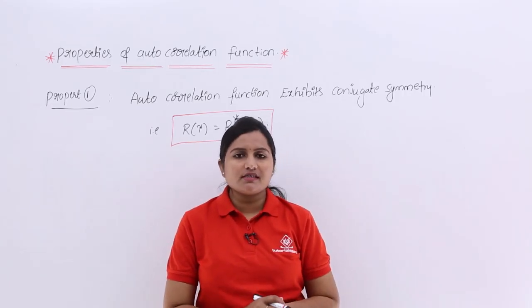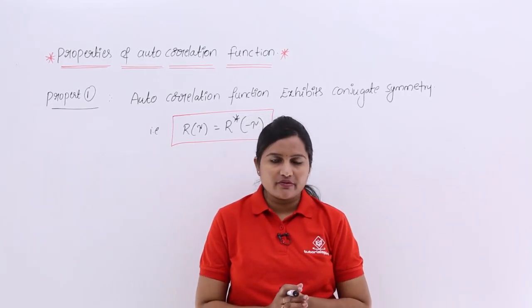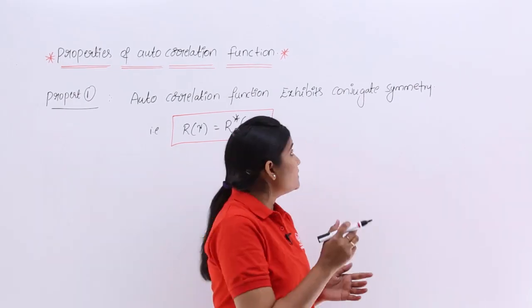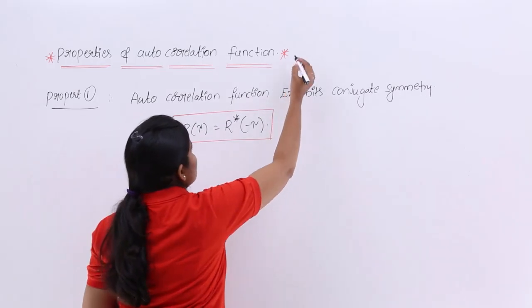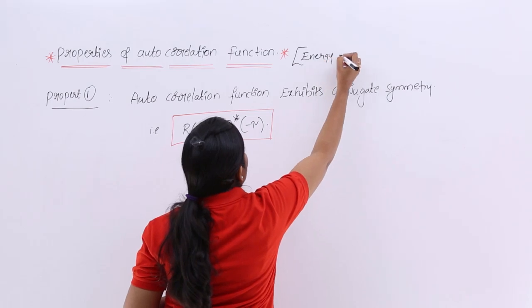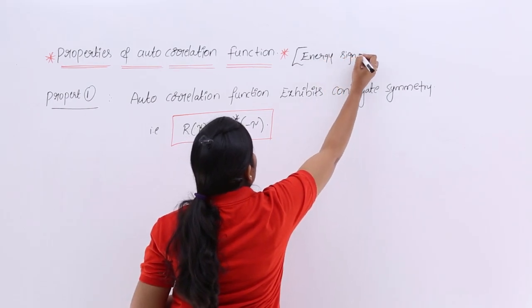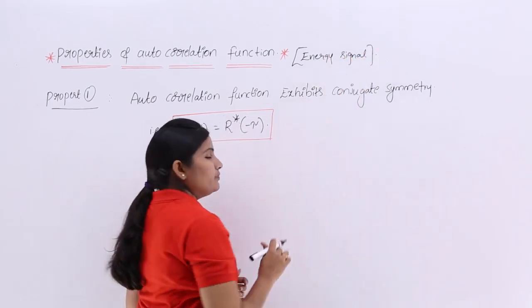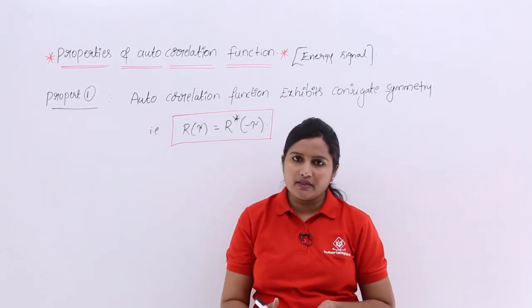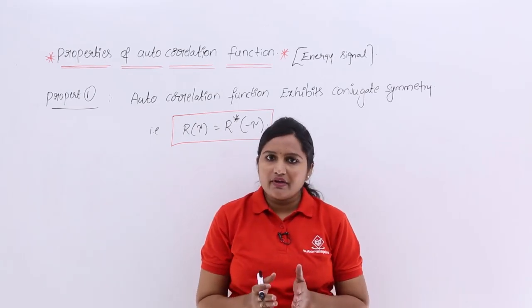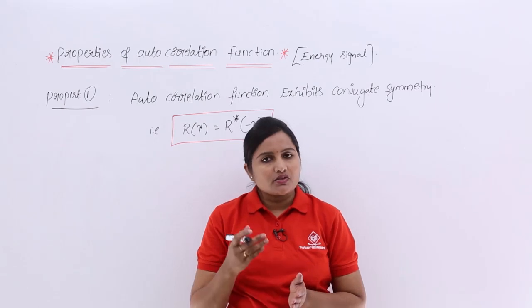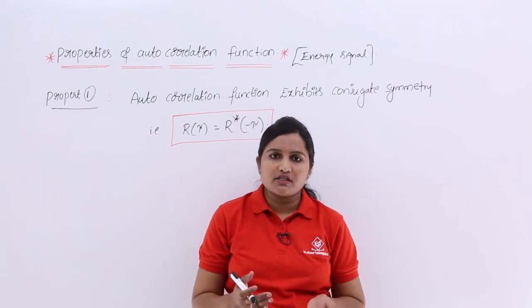In this video we are going to discuss the properties of autocorrelation function — specifically the first property of autocorrelation function of energy signals. These are the properties we are going to discuss for energy signals; later we will discuss for power signals also. For power signals the same properties will repeat, so I am giving a clear account of the properties of energy signals.